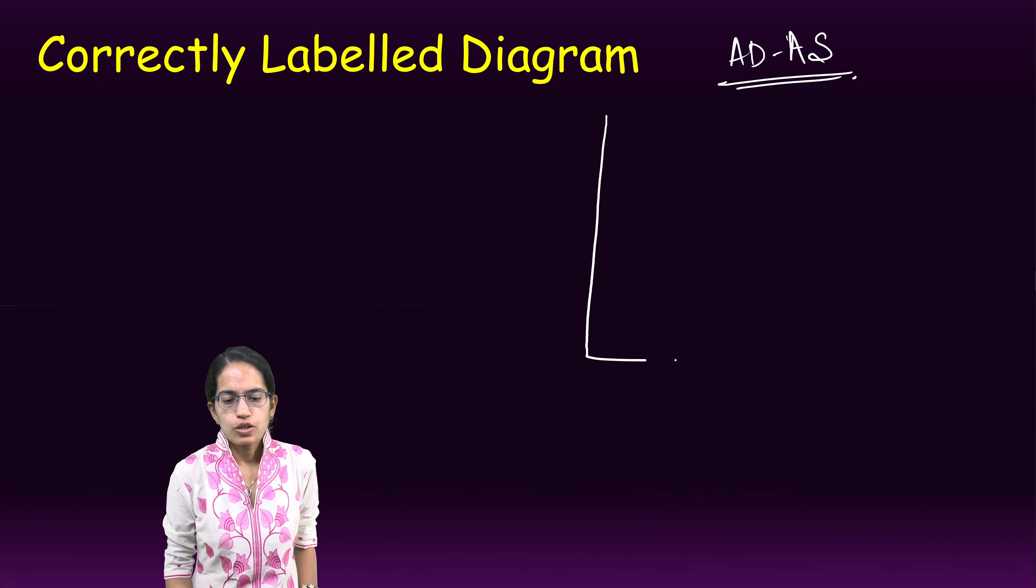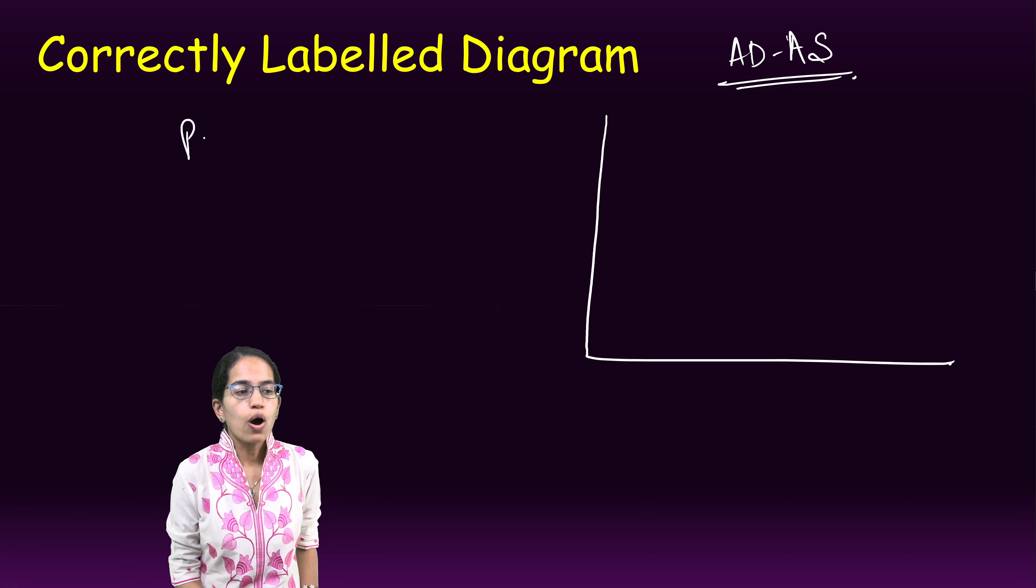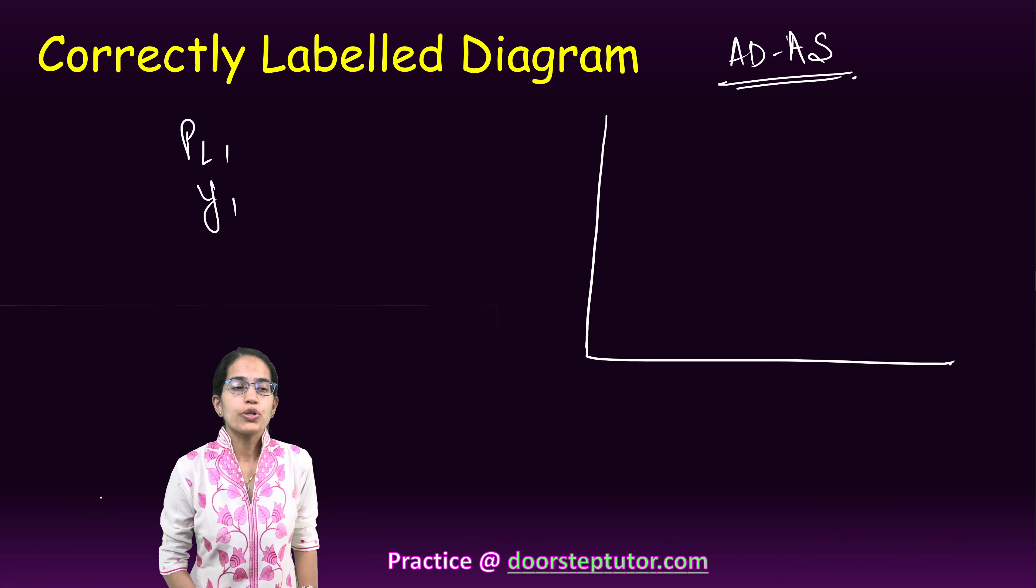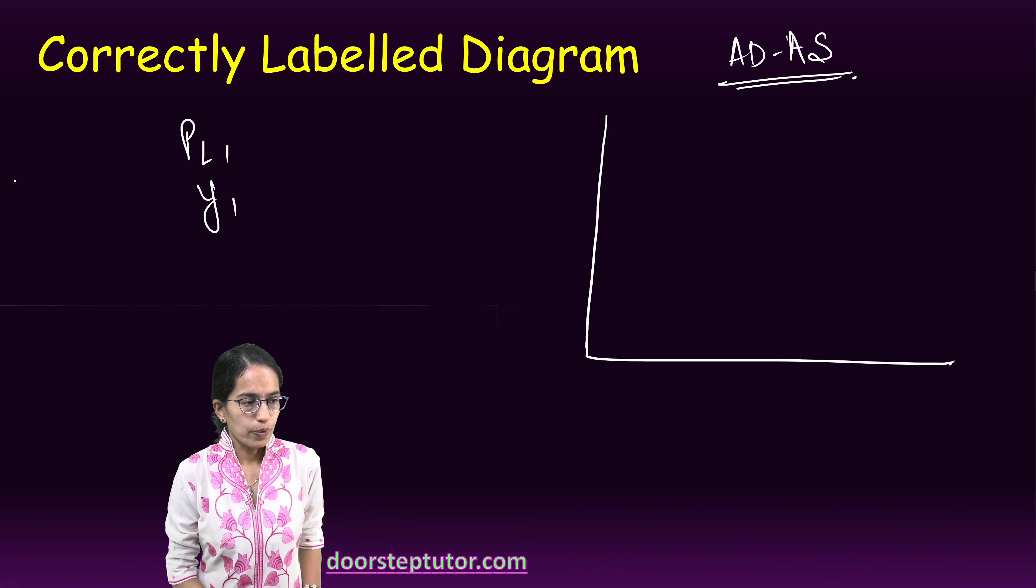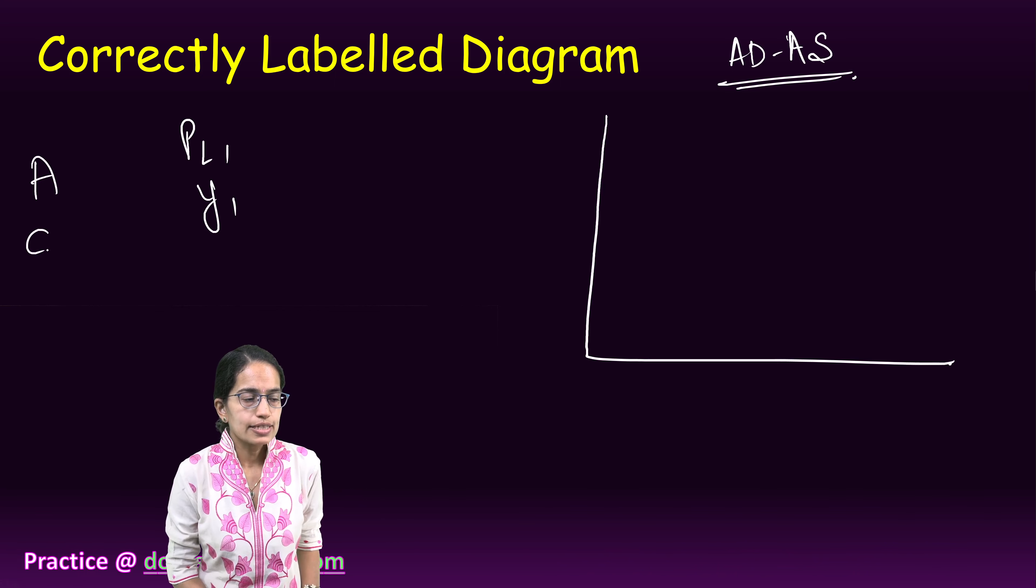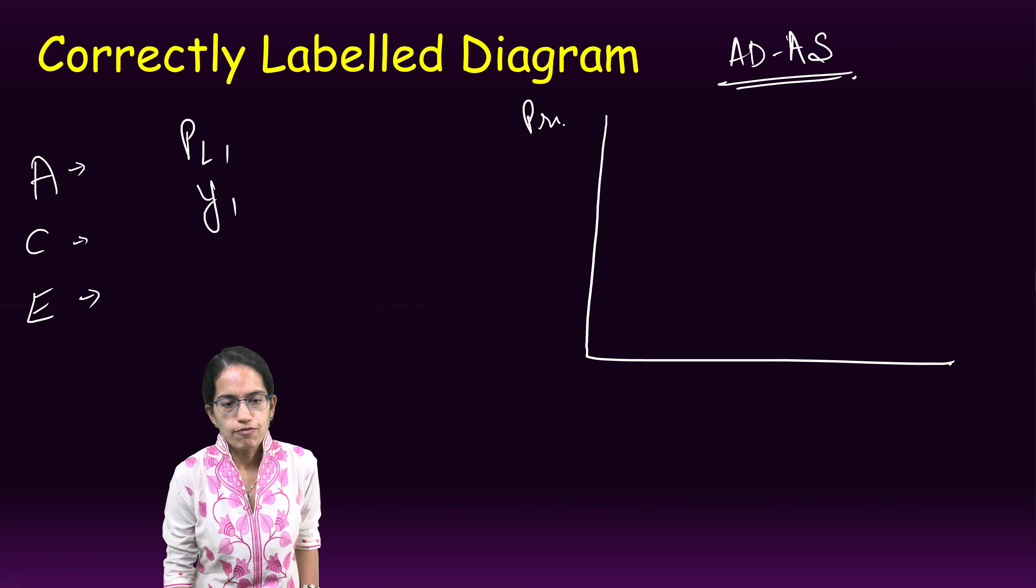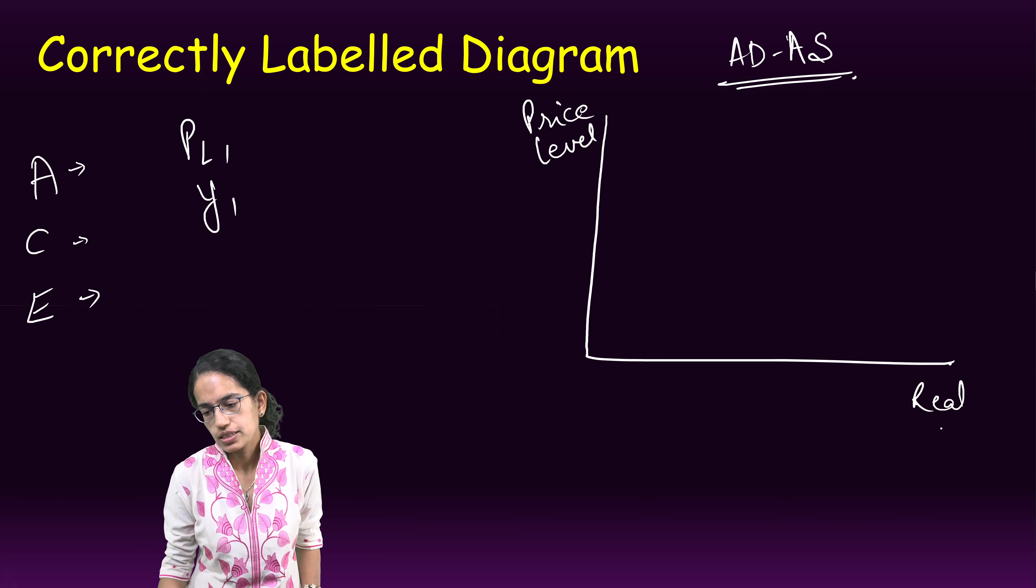In that case, you are asked to draw the current price levels as PL1 and the output level as Y1. How would you draw this? There are three important elements we call the ACE method. A is the axis. The axis has price level, and against the price level there is real GDP.